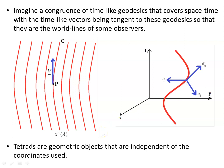Tetrads are geometric objects that are independent of the coordinates used. The timelike vector is tangent to the geodesic — the world line of the particle. Observers in spacetime follow geodesics and those geodesics are their world lines.